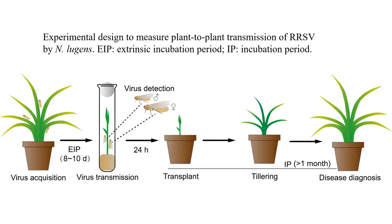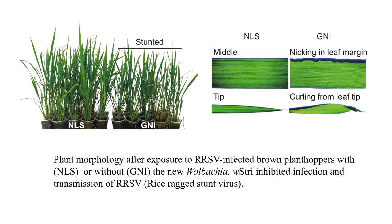Our next question was: can this new strain of Wolbachia affect the ability of the brown plant hopper to transmit plant viruses? We focused on a virus called RRSV, or rice ragged stunt virus, which is transmitted by the brown plant hopper and is a very important virus. We took plants infected by this virus, exposed them to plant hoppers with and without the new Wolbachia strain, then moved the plant hoppers to uninfected rice plants and looked for transmission. We found that plant hoppers with the new WSTRI Wolbachia strain really didn't transmit the virus to the same extent as plant hoppers that lacked it.